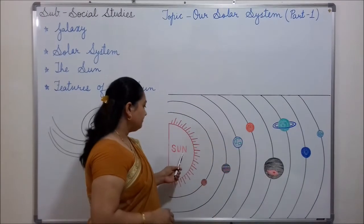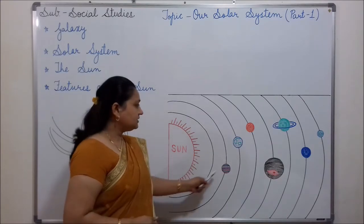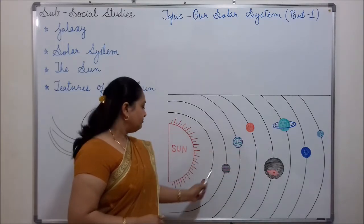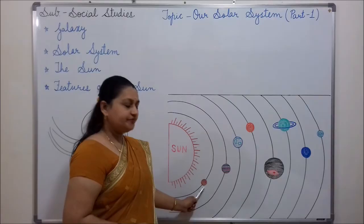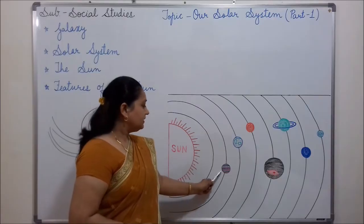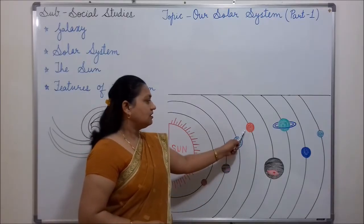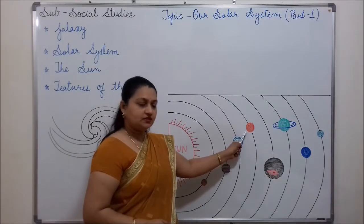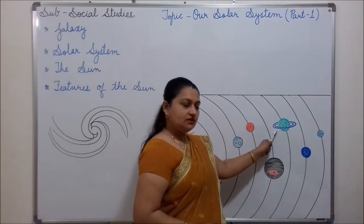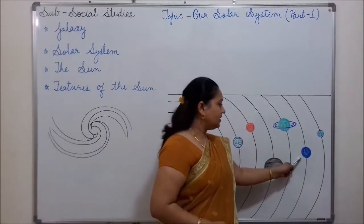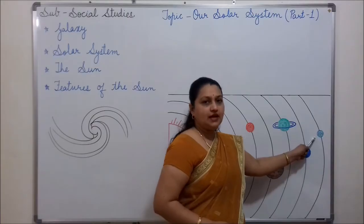You see here — this is the sun, and these are the eight planets. First it is Mercury, then Venus, Earth, Mars, Jupiter, Saturn, Uranus and Neptune.